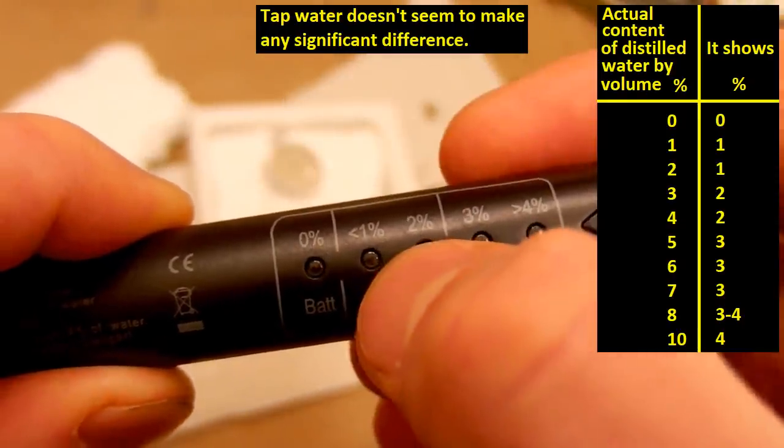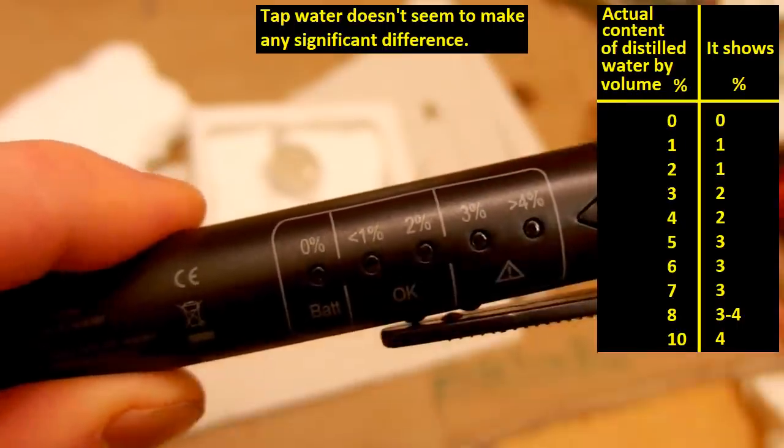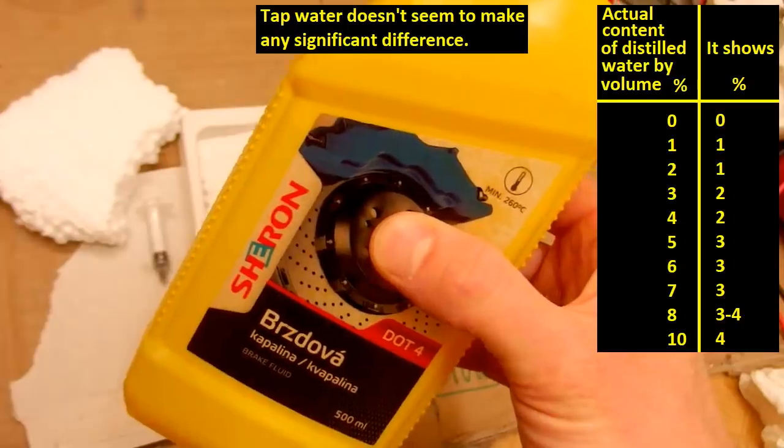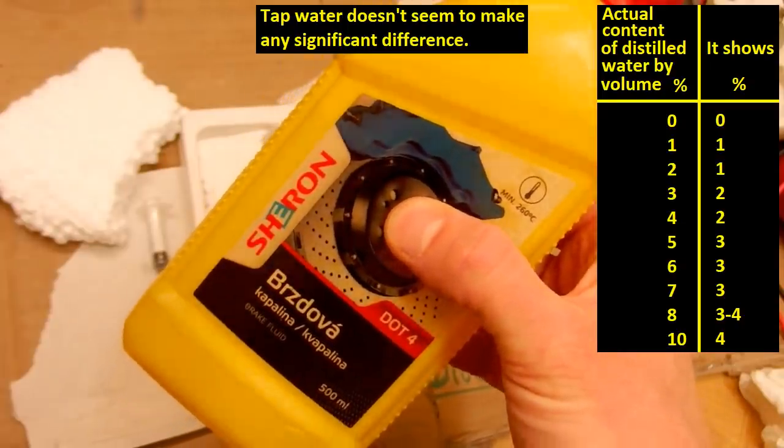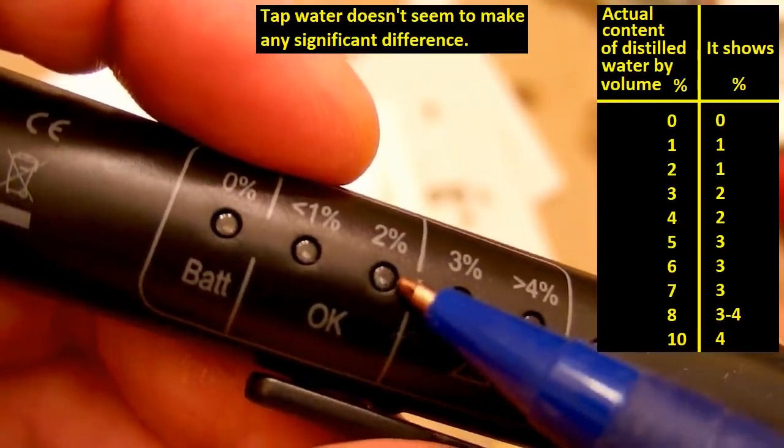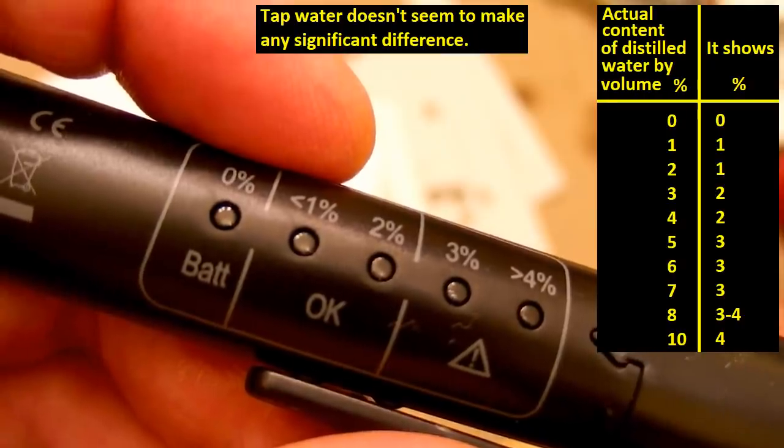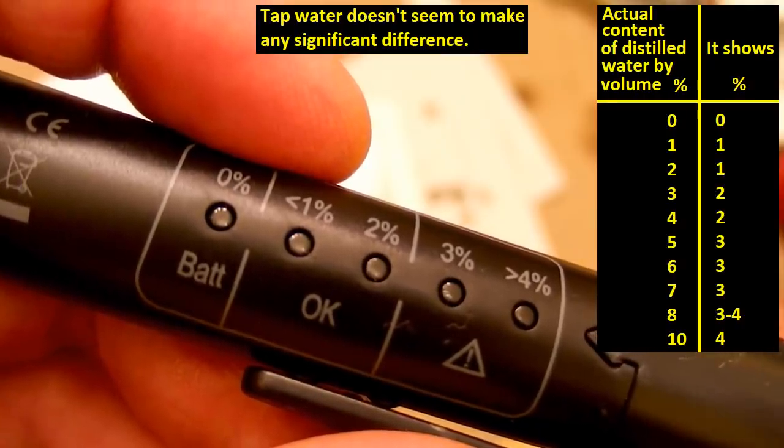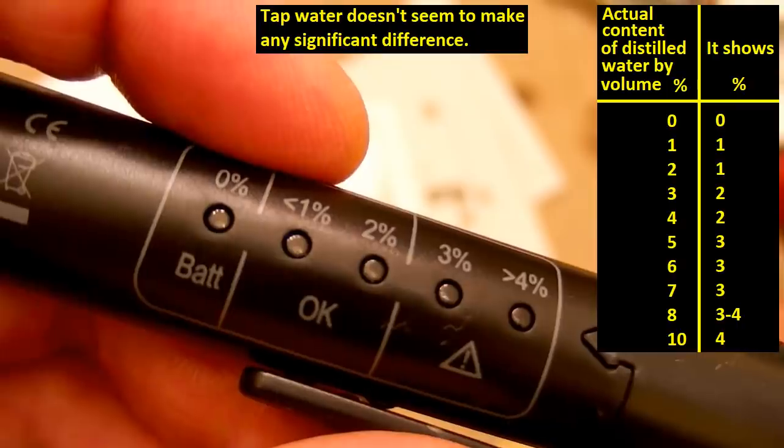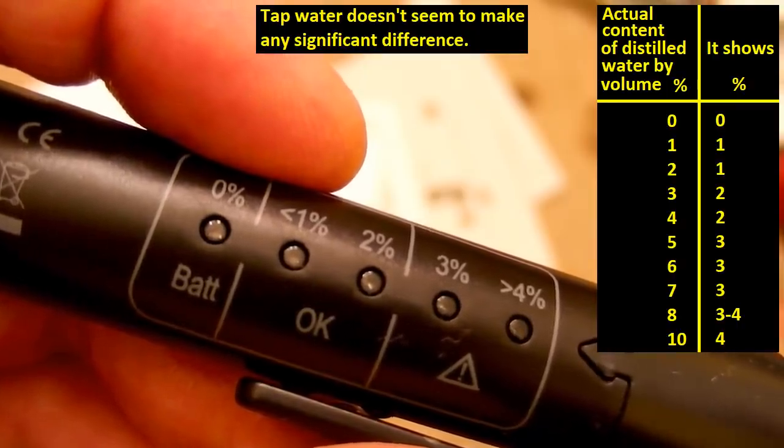It sometimes blinks even with fresh brake fluid, as long as some moisture didn't get into my bottle actually. So I would say that two percent LED means replace. But anyway I can't guarantee it. And in any case you should always replace your brake fluid once every couple years or stick to the brake fluid change interval recommended by your car maker.